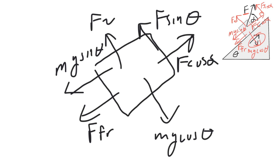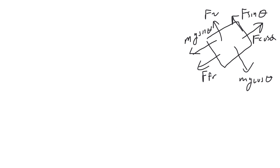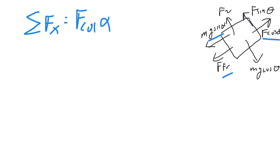Let's set up our equations. For the horizontal summation, we just add and subtract all the horizontal forces from the free body diagram. We have three horizontal forces, so: F cosine of alpha minus mg sine theta minus friction, and that equals mass times acceleration.